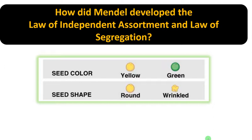Hi friends. In this video let us understand what is the actual difference between the law of independent assortment and the law of segregation, proposed by Gregor Mendel. For that, let us consider seed color and seed shape. As we know, yellow seed color is dominant over green, and round seed shape is dominant over wrinkled.